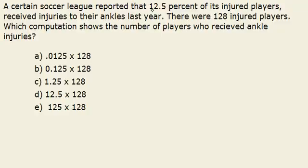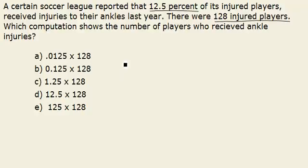So we know that 12.5% of the injured players have ankle injuries. We know that there are a total of 128 injured players. So we find out the number of players who have ankle injuries out of this total by multiplying 12.5% by 128.